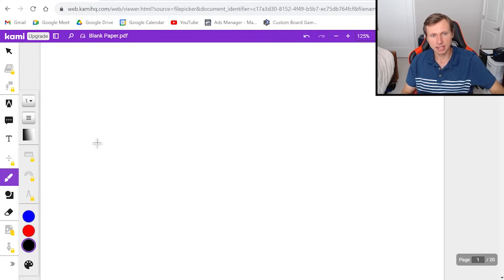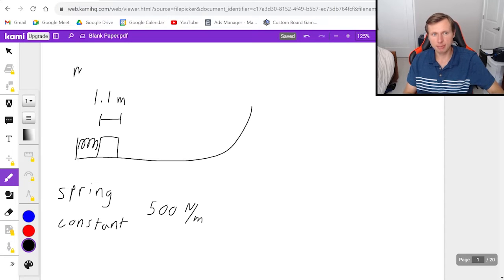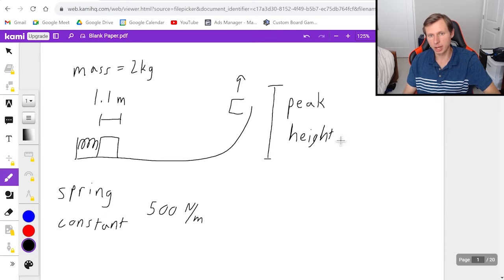So the first one I have here today is I have a ramp and a spring launching a box up the ramp. Originally this box is fully compressed from a distance of 1.1 meters from its rest length. I'm going to say it has a spring constant of 500 newtons per meter and this box is going to have a mass of two kilograms. My question is after we launch this thing and it's going to go up this ramp and eventually it's going to go in the air, my question is what is its peak height going to be?